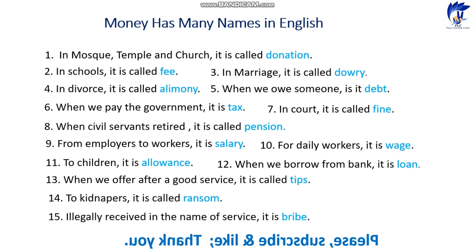Number fourteen: money paid to kidnappers is called ransom. Sometimes it happens around the world — kidnappers kidnap people or children and then ask for money. The money paid for releasing those people is what we call ransom.